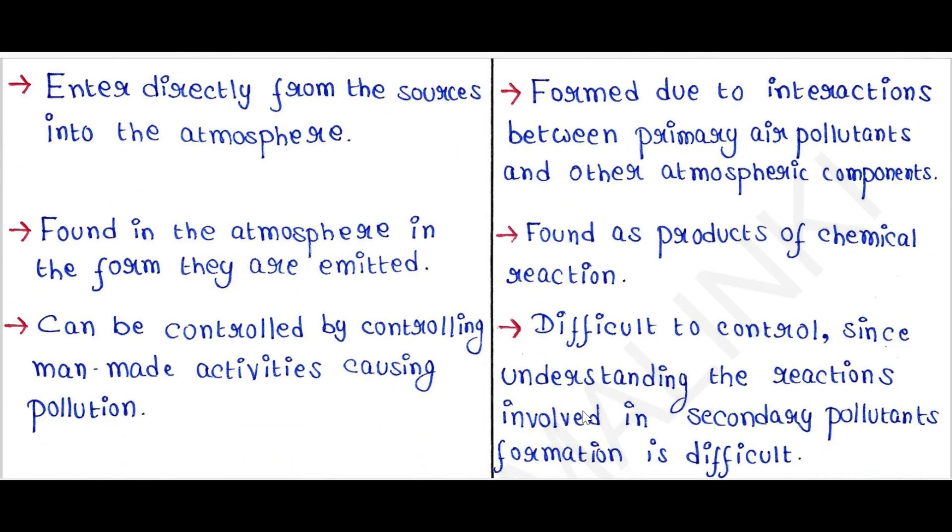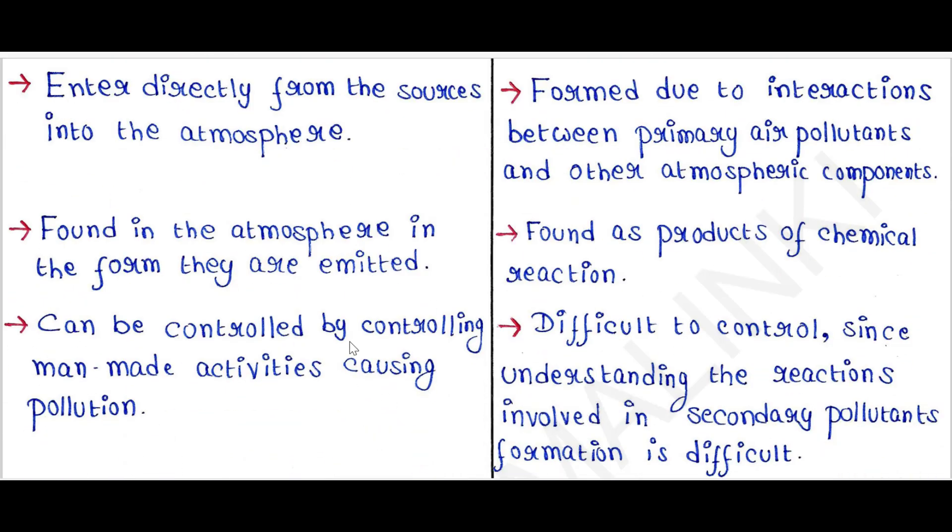Primary pollutants can be controlled by controlling man-made activities causing pollution. Secondary pollutants are difficult to control since understanding the reactions involved in secondary pollutants formation is difficult.